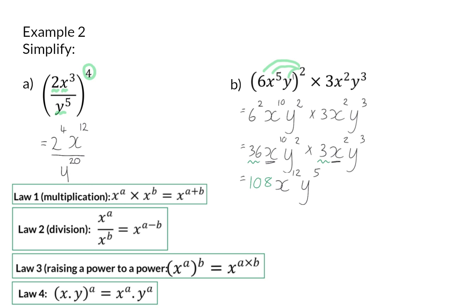So it is very important to be able to identify which law to use when. Because here, in my first step, I used law 3, when I multiplied the two exponents with each other to get 10. And in the last step, I added the different exponents to get the final exponent.